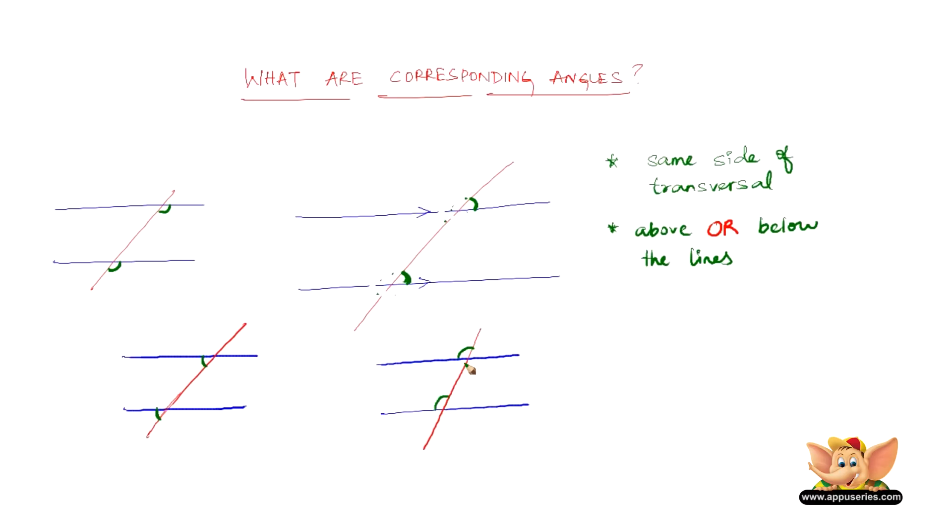Any two angles can be called corresponding angles if they lie on the same side of the transversal, and both of them should be above or below the blue lines here.